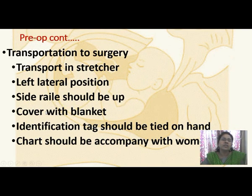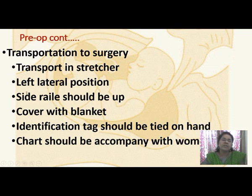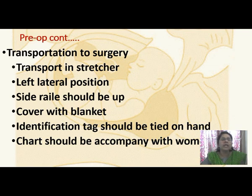Transportation to the operating theatre: the patient should be transferred on a stretcher. The patient is placed in left lateral position or the side rail should be up. If the patient is in supine position, a pillow is placed under the right side of the lower abdomen to tilt her to the left side. The side rail should be up, the patient covered with a blanket, and an identification tag should be tied on. The chart should be taken along with the patient.